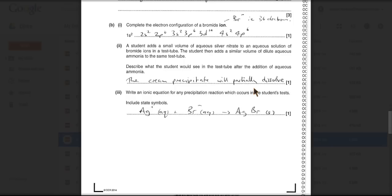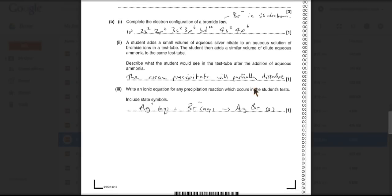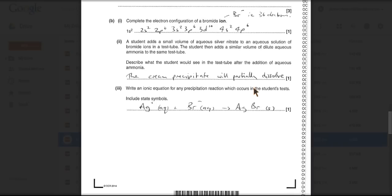And so the question's saying, what will a student see at the end of all of that? And I've written there, and I think I should have written something slightly better. The cream precipitate will partially dissolve, so therefore the student will still see a cream precipitate. So that's what I would write now.